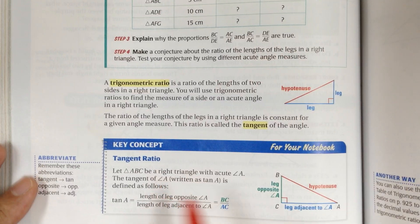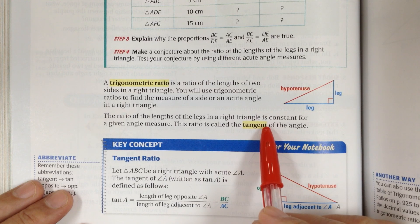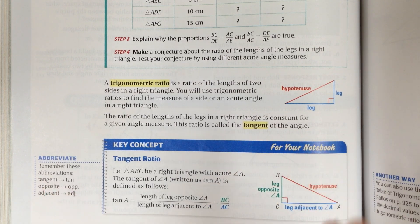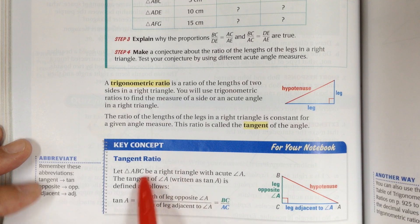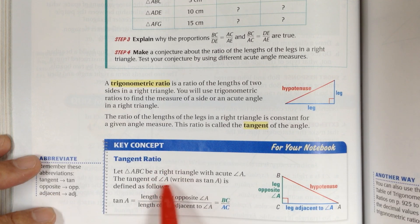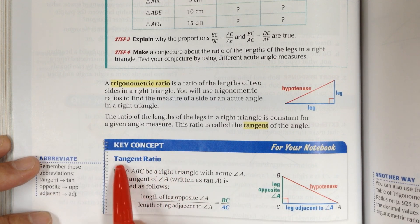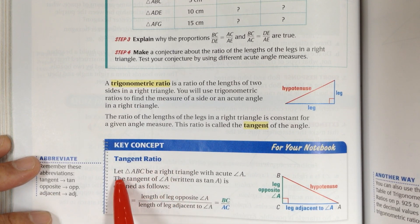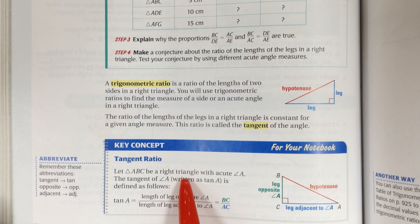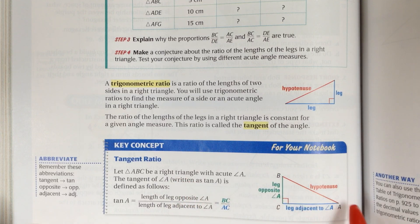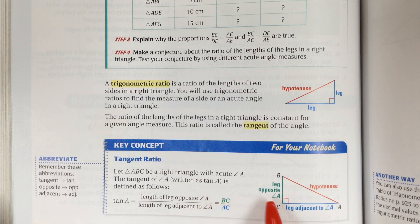Tangent is the name of the ratio — it is a ratio of the two legs or two sides. Here's the definition: tangent ratio. For triangle ABC, normally you want to put C for the right angle.